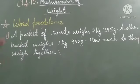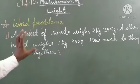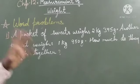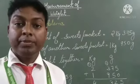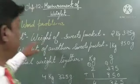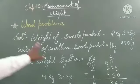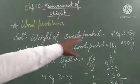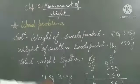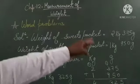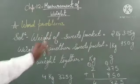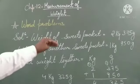First of all, we will try to write the statement. You can check in the question and write that statement in your answer. Now the statement will be: weight of sweets packet is 2 kg 375 grams. Weight of another sweet packet is 1 kg 950 grams. By looking at the question you will make these two statements.